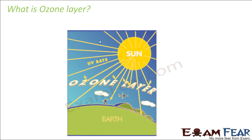Now out of these radiations, some of them are quite useful to the earth. For example, visible light is helpful to us. But when you talk about some of these radiations like ultraviolet radiation, these are not really useful. Instead they have got many harmful effects on living cells.